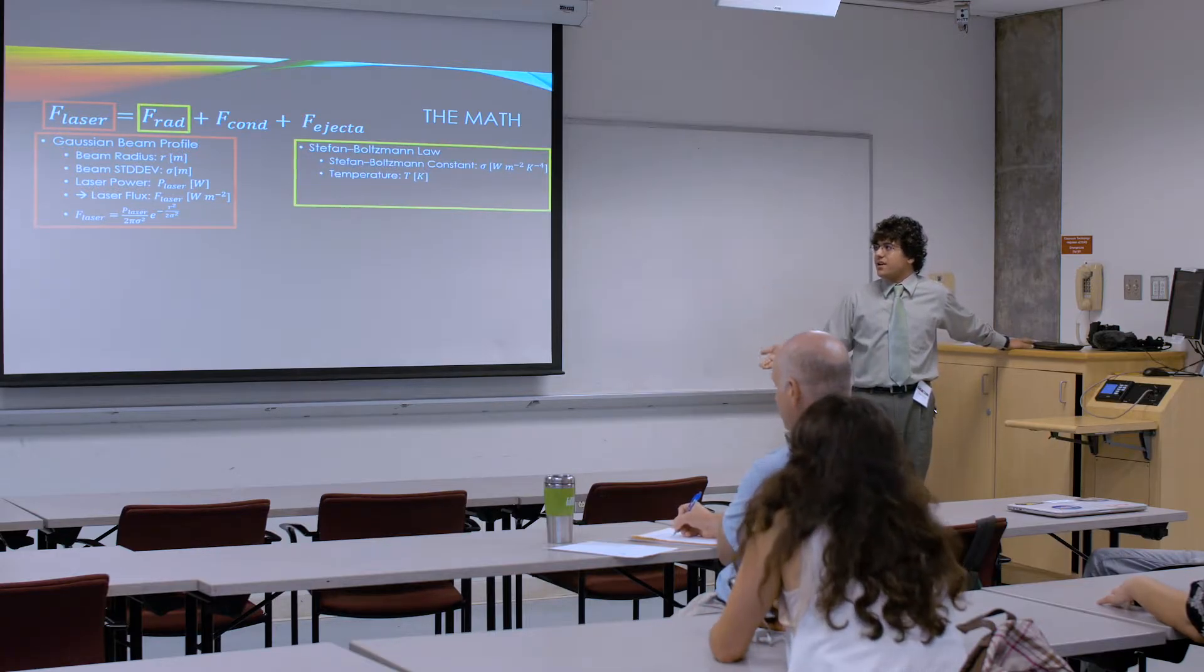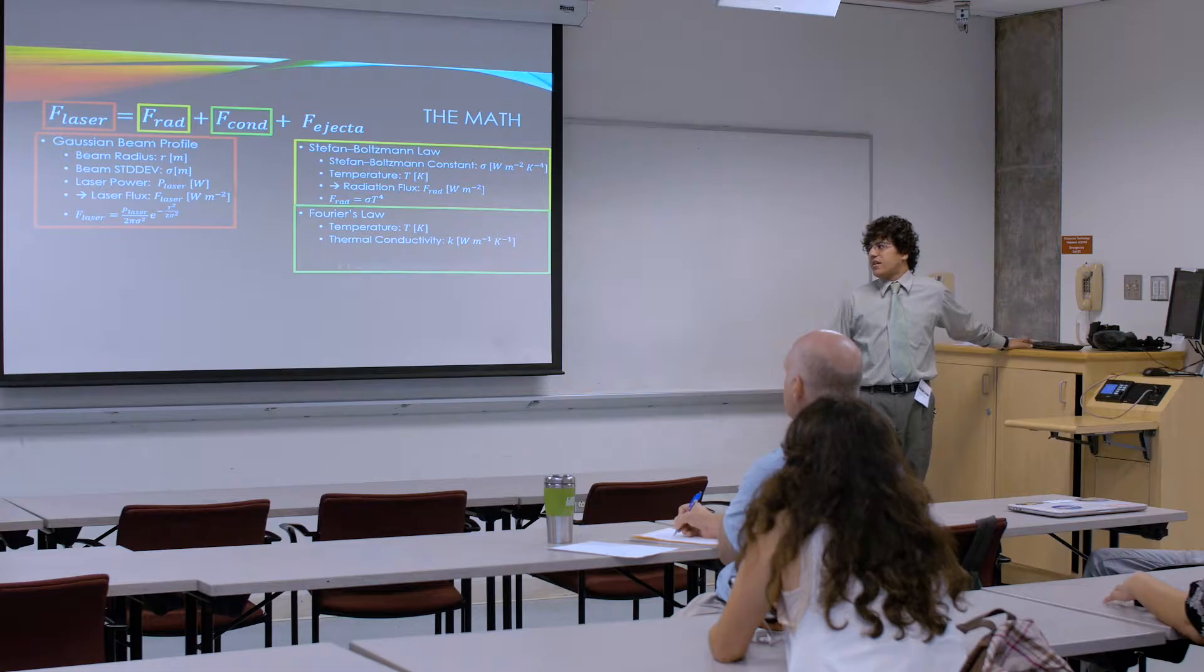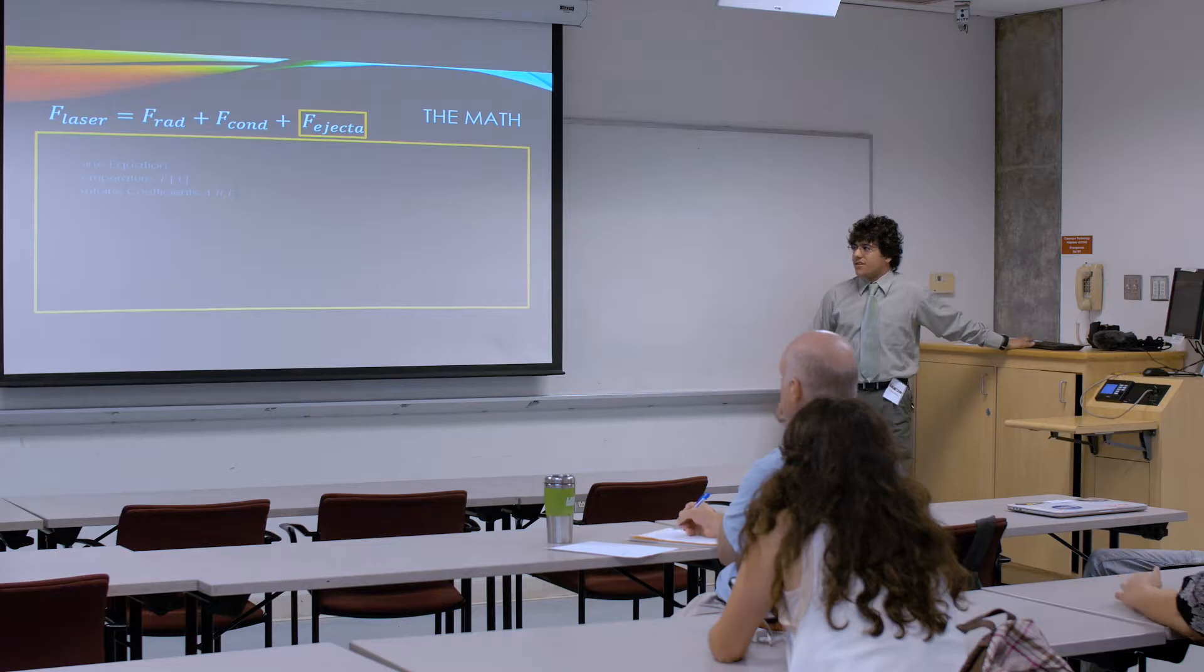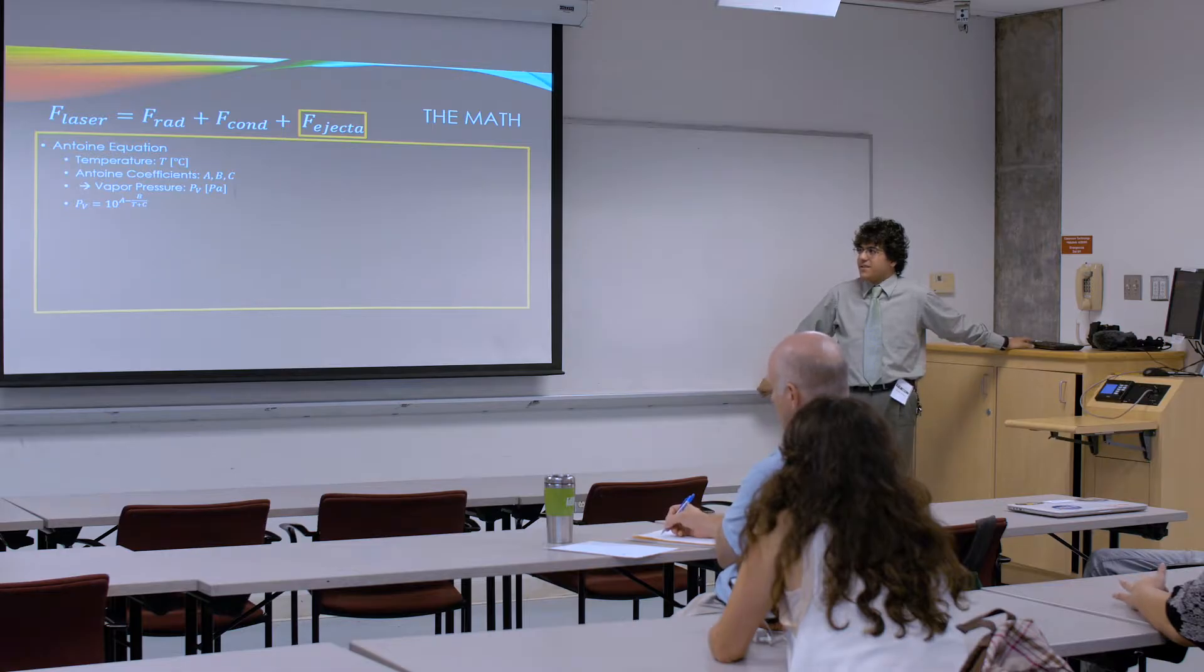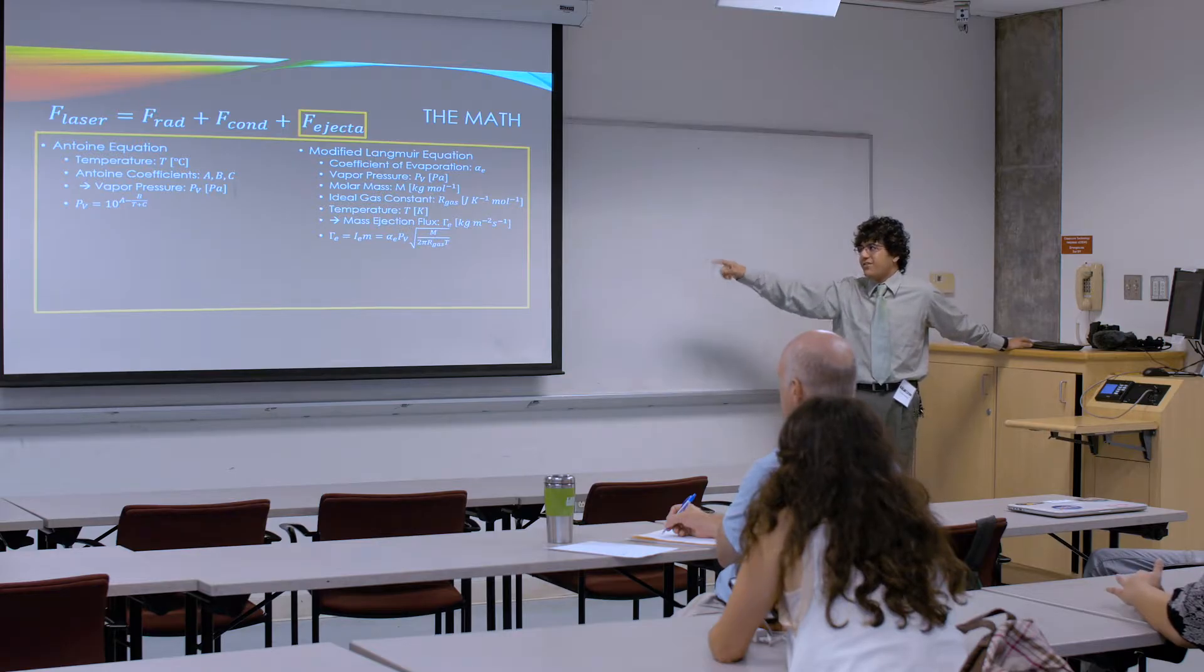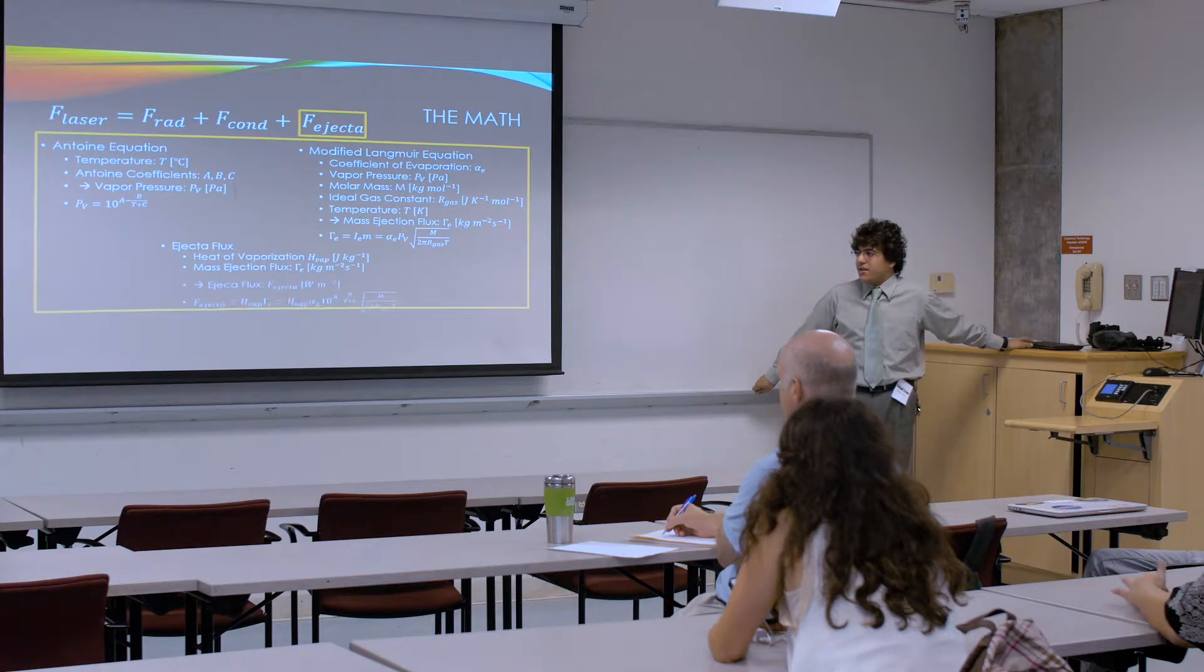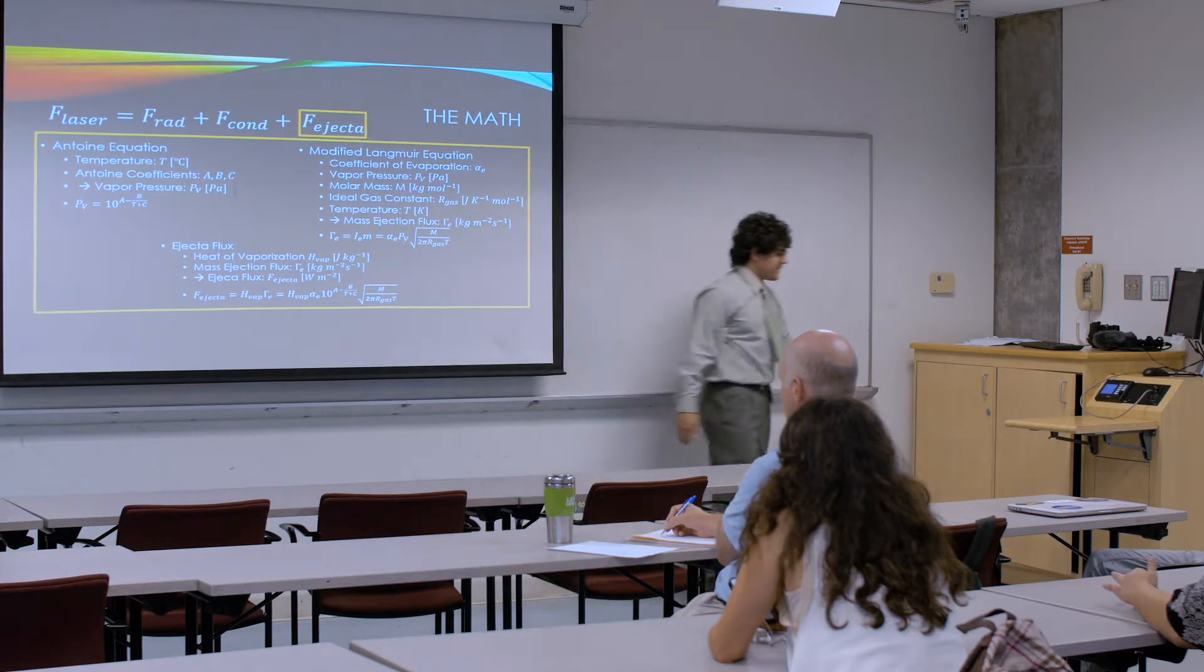Stefan-Boltzmann's law, using his constant and temperature, we can calculate the radiation. Fourier's law, with the temperature and thermal conductivity, we can calculate thermal conduction. And then for the big one, the flux of ejection is kind of complicated. First, you need to use Antoine's equation, which is three constants that are specific to each material, and vapor pressure. Then you take that and plug that into a modified Langmuir equation, which takes a whole bunch of constants, mass, vapor pressure, and temperature. Then you multiply by the heat of vaporization to get the flux of ejection. At the end of the day, you have this massive nastiness down there.